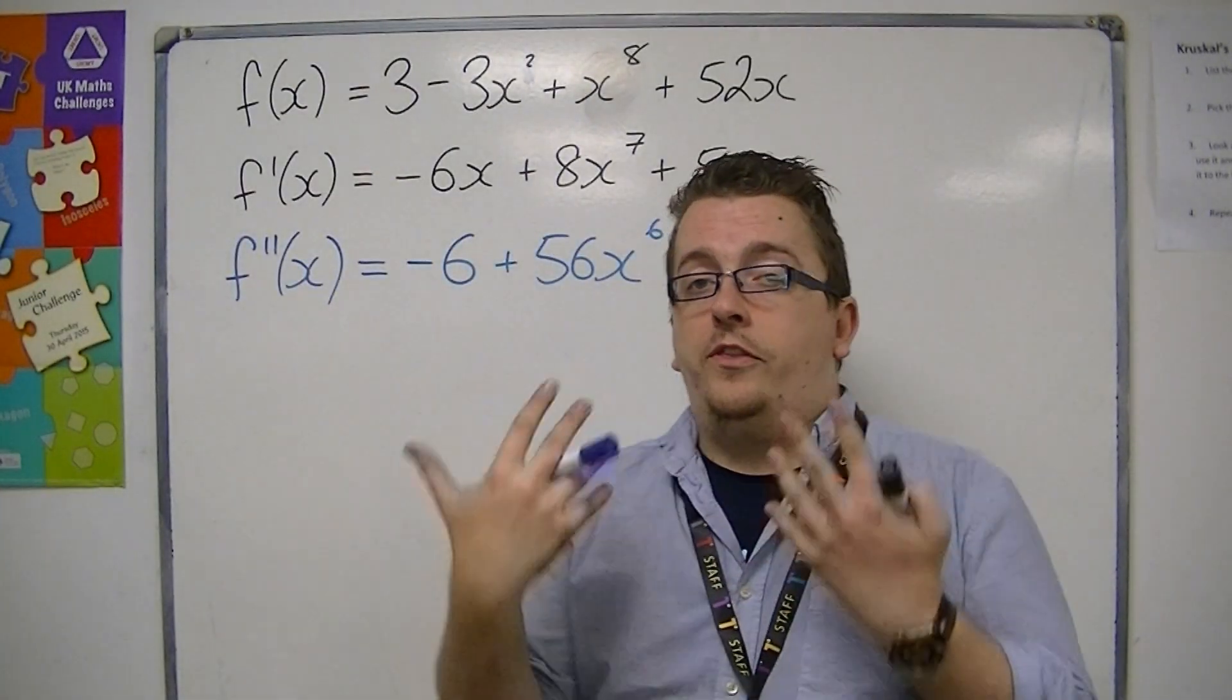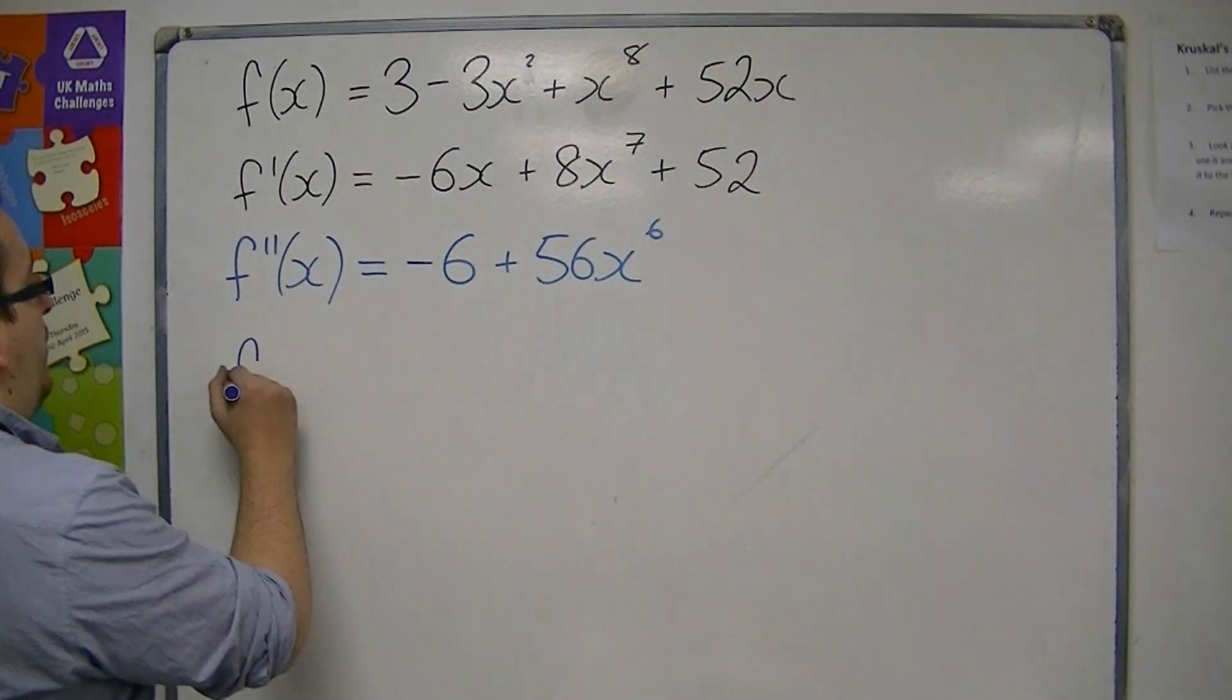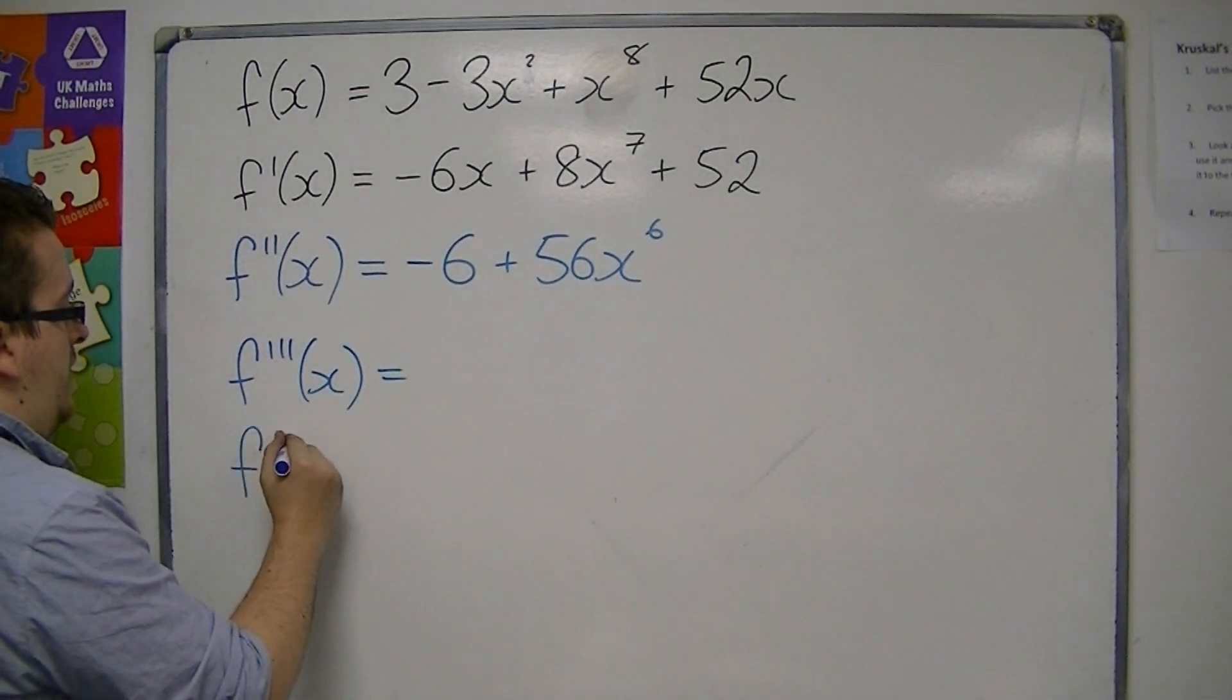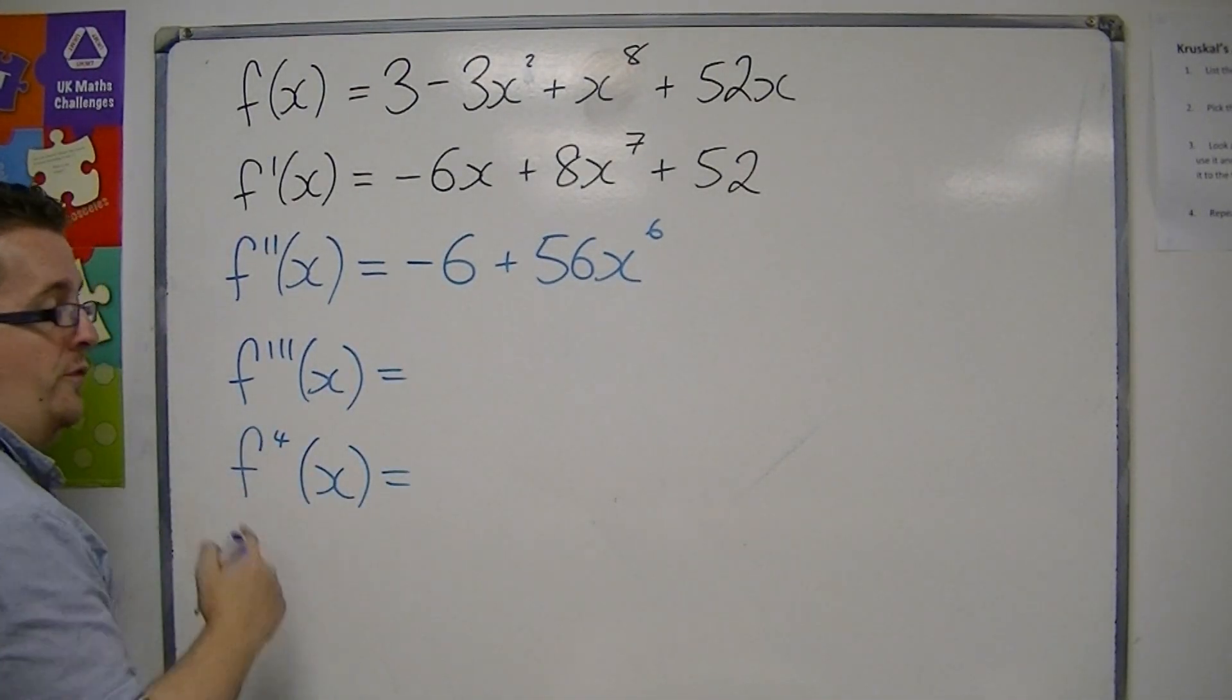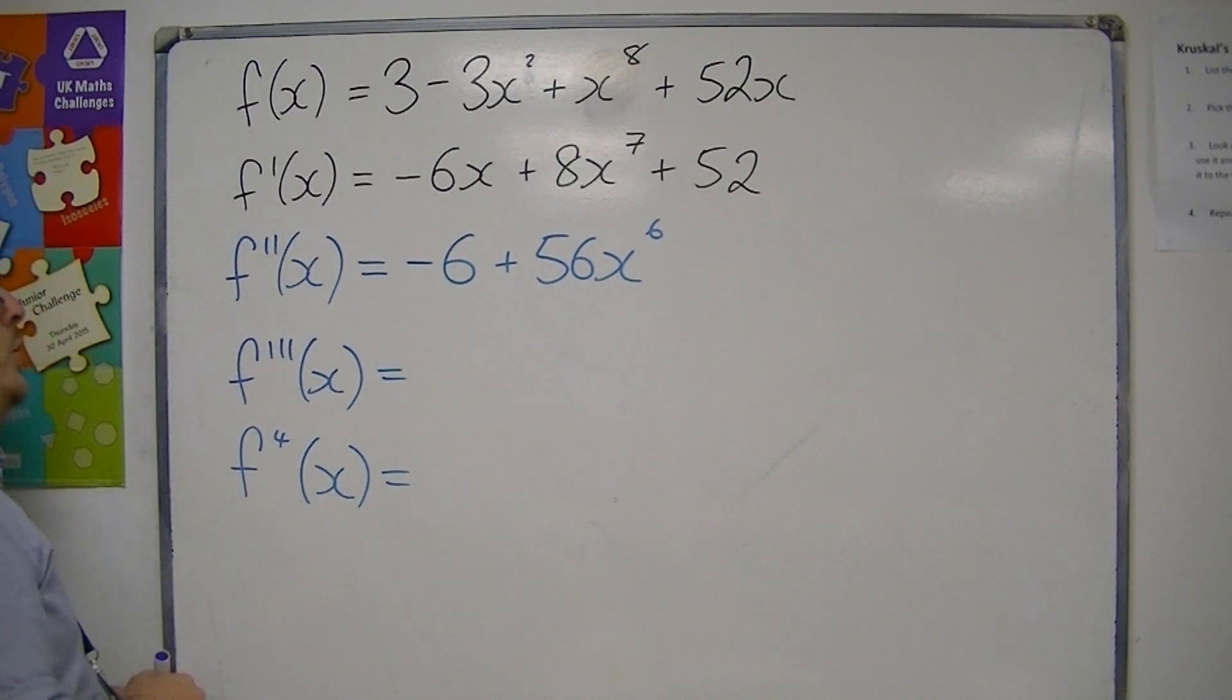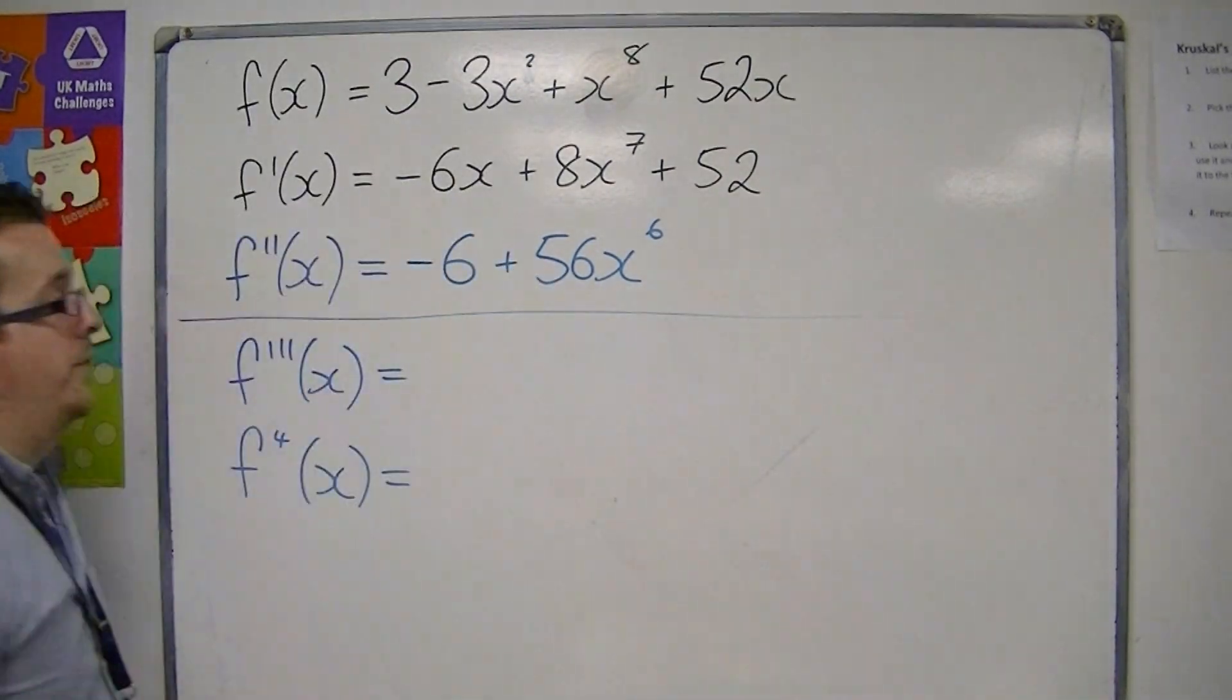Then you could find the third derivative, fourth derivative. By the time you get past the third derivative, we start using numerical values, so 4, 5, 6, 7, etc. But any question you're going to be considering in core 1 won't go beyond the second derivative.